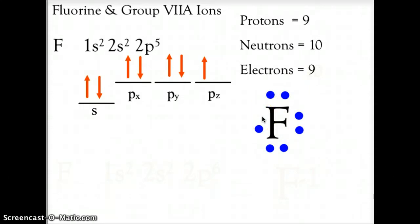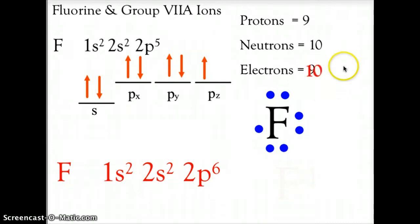Should fluorine try to get rid of 7 or just pick up 1? Well, it will pick up 1. It will become like Neon. It will become stable at the rule of octet, 2s² 2p⁶, and because it now has an electron count of 10 but it only has 9 protons, this means it has 1 extra negative charge, making it an F⁻¹, and this will be the same for all of the halogens, chlorine, bromine, iodine, and so on. They will all take on that anion form of F⁻¹ or a negative 1 charge.